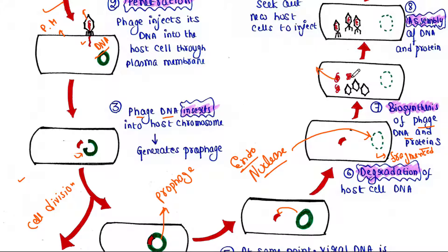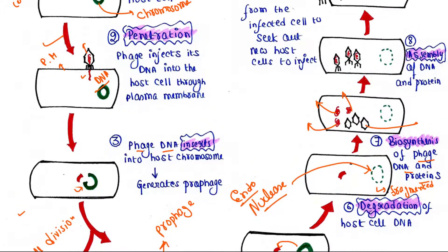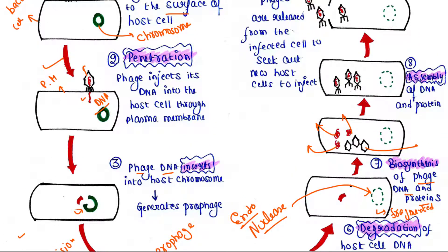So we can see that many viral DNA molecules and many viral proteins are now generated. The next step is their assembly — the assembly of viral DNA and viral protein will occur. Here we can see that viral DNA is now inserted inside the viral protein coat.